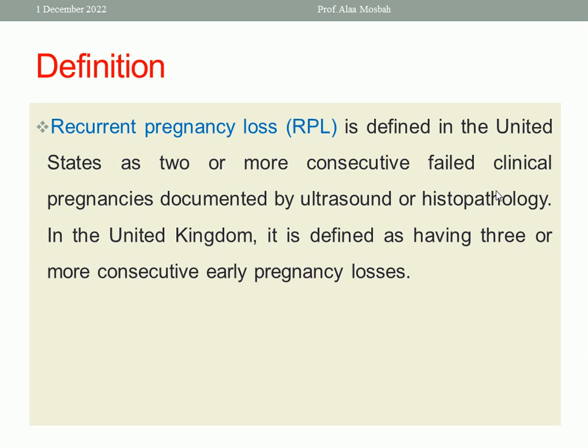First, let us start with the definition. Recurrent pregnancy loss is defined differently in the United States than the United Kingdom. In the United States, it is defined as two or more consecutive failed clinical pregnancies documented by ultrasound or histopathology — not by biochemical pregnancy test alone.